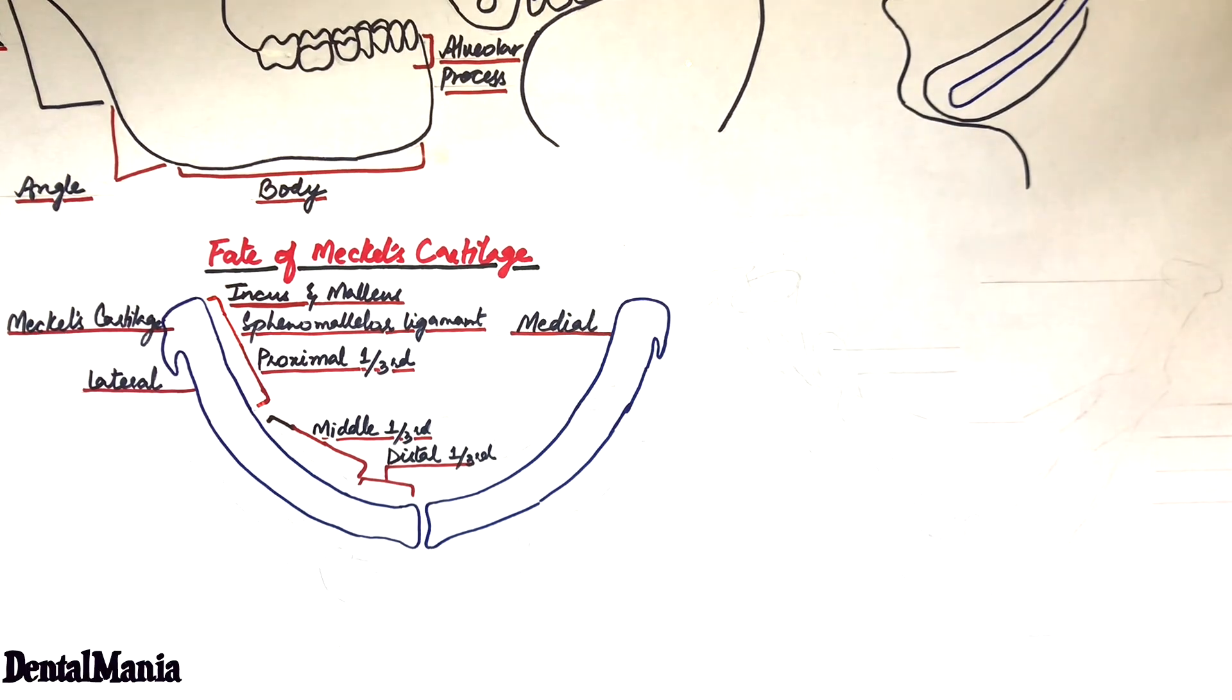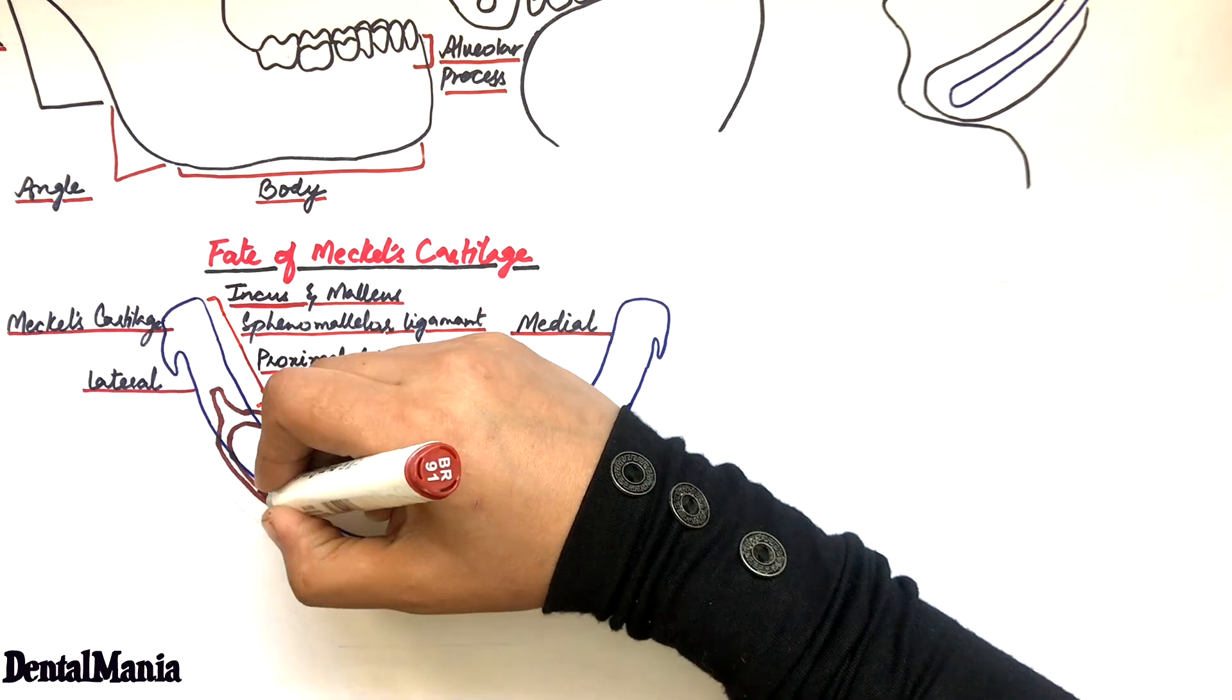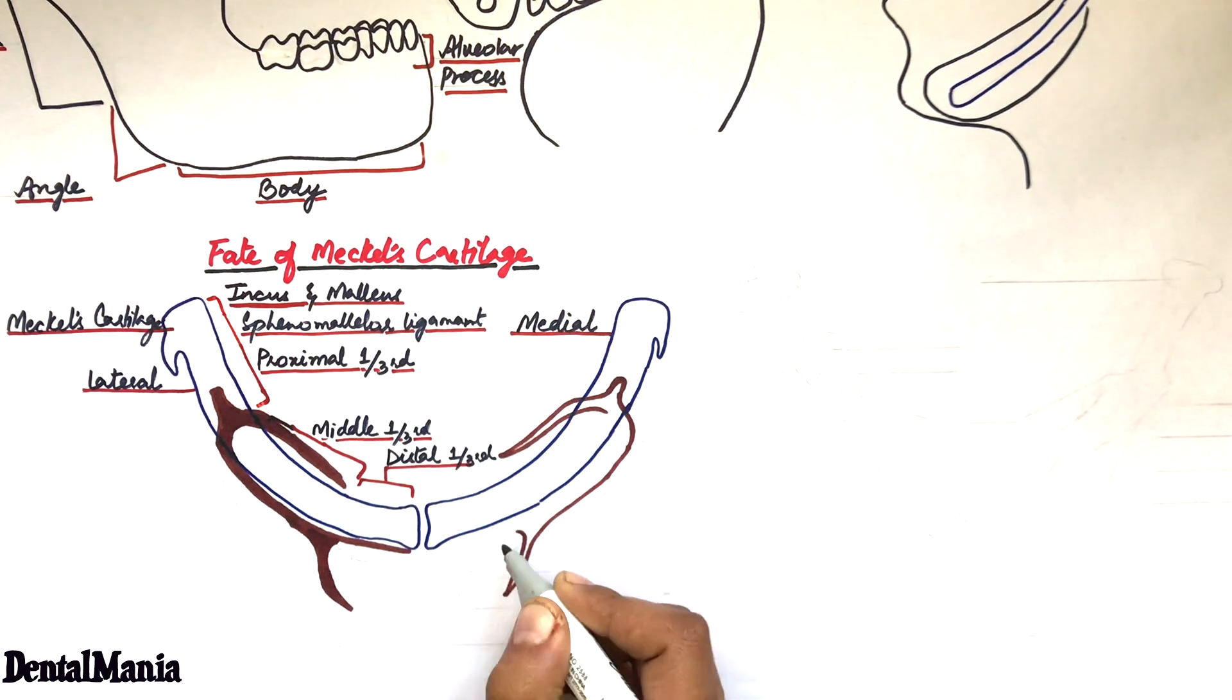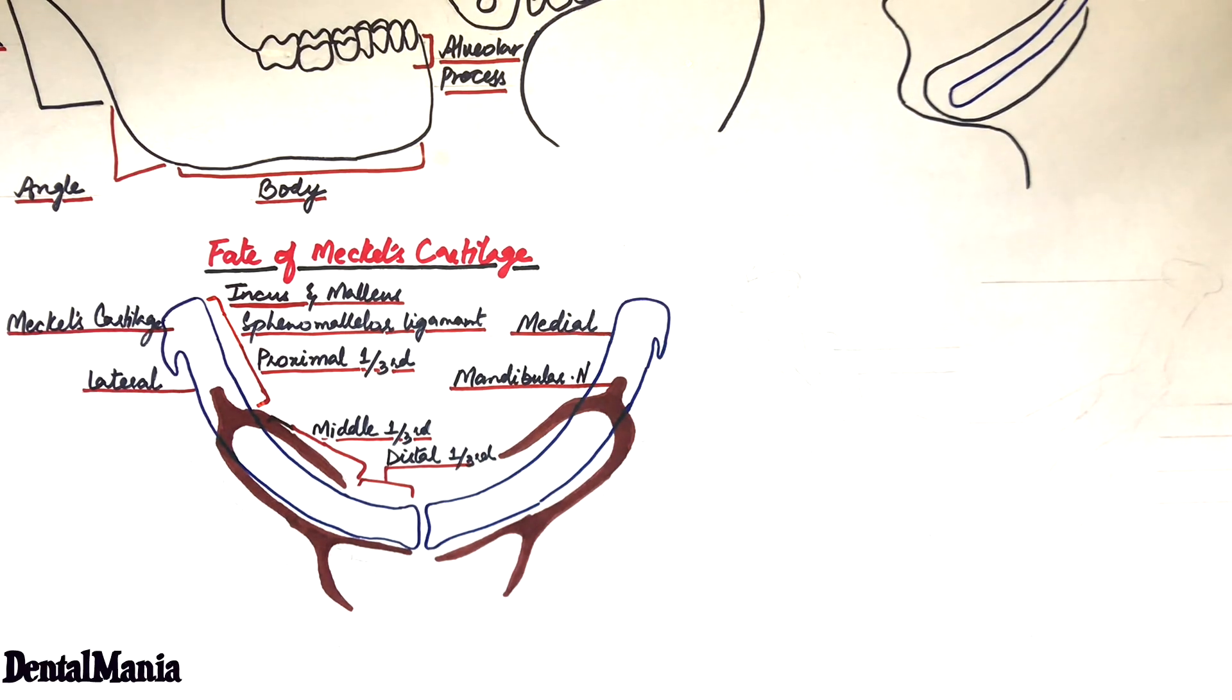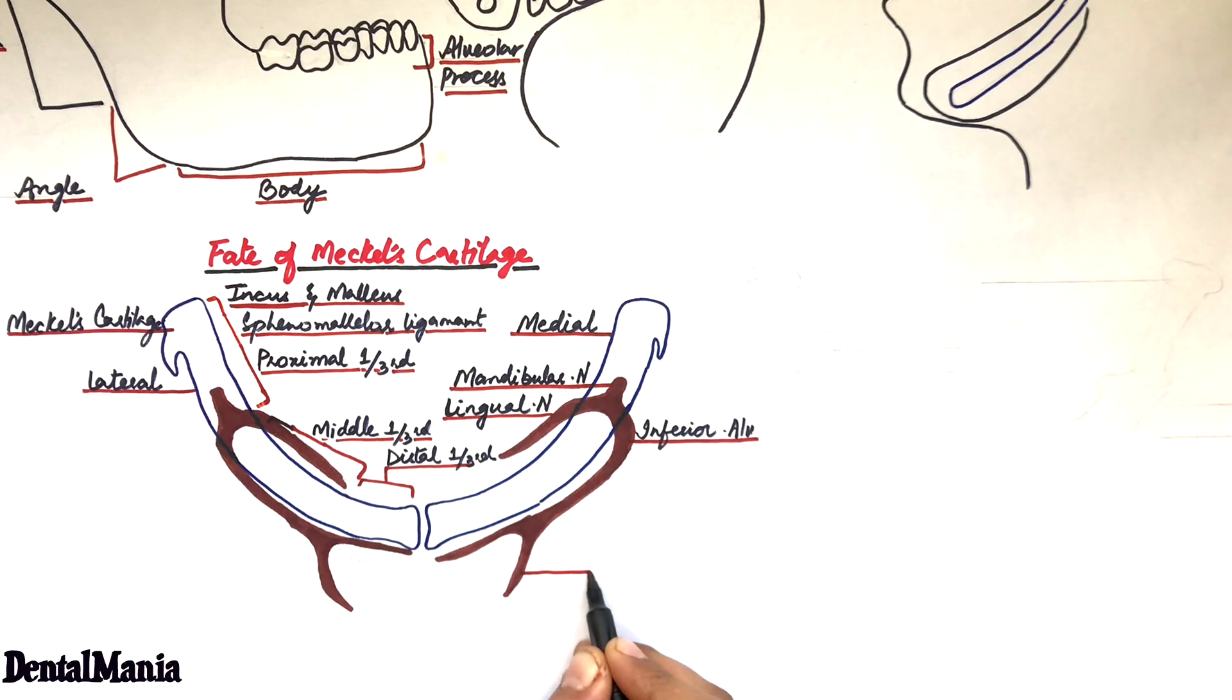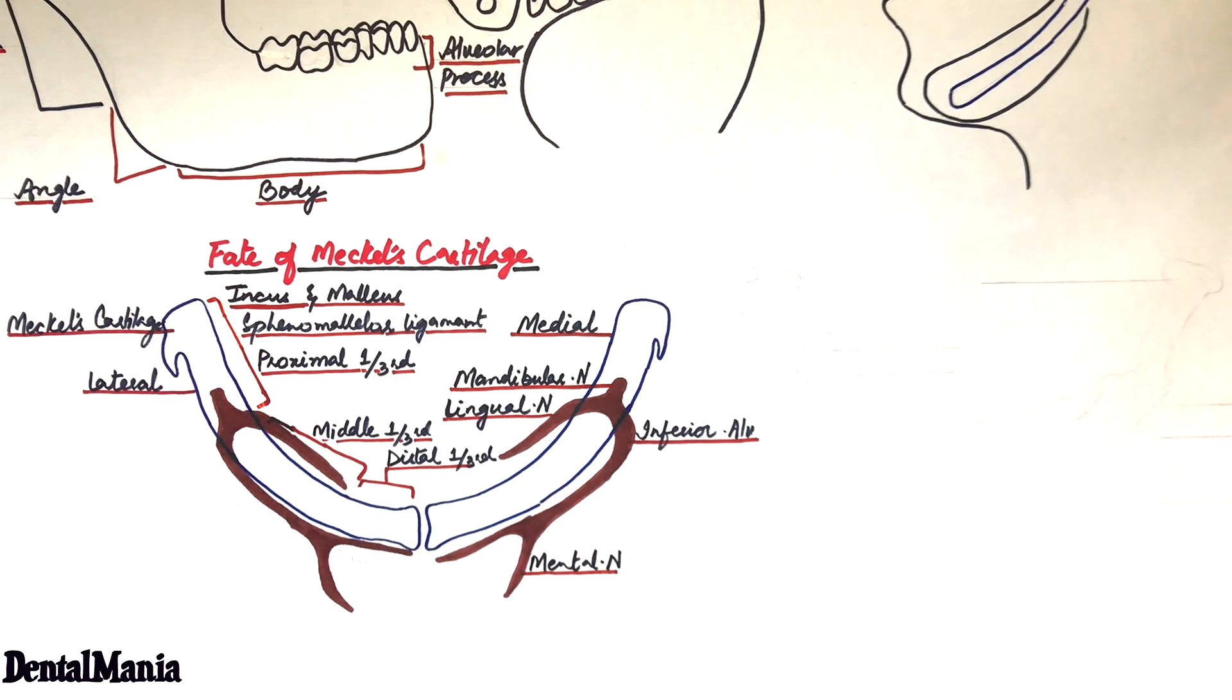The mandibular branch of the trigeminal nerve has a very close relationship to the Meckel's cartilage. At the middle one-third of the cartilage, the nerve divides into inferior alveolar nerve and lingual nerves which run along the lateral and medial aspects of the cartilage. At the distal third of the cartilage, the inferior alveolar nerve further divides into the mental and incisive nerves.